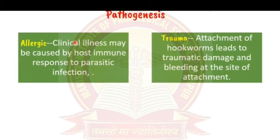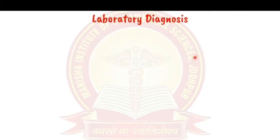Pathogenesis: when a parasite enters our body, the body produces antibodies against it, which can lead to redness or allergic reactions. In some cases, such as hookworm infection where the parasite enters through bare feet, bleeding and trauma can also occur as part of pathogenesis.